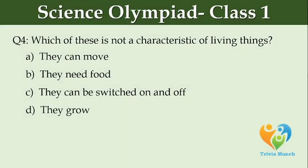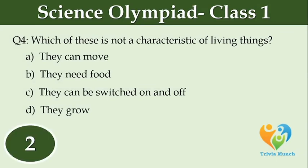Which of these is not a characteristic of living things? Option A: They can move. Option B: They need food. Option C: They can be switched on and off. Option D: They grow.